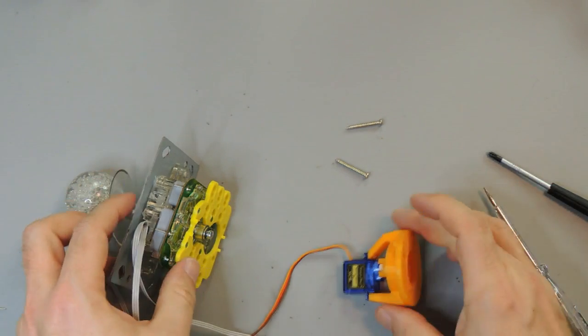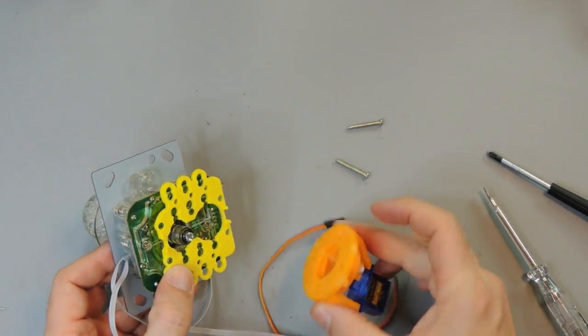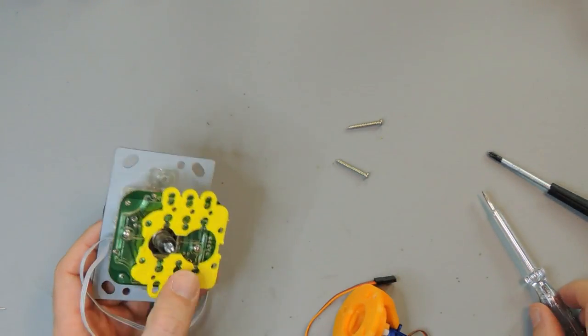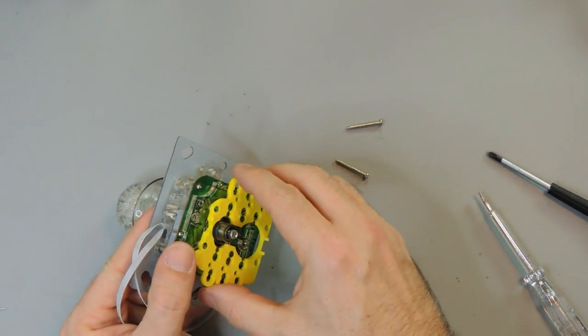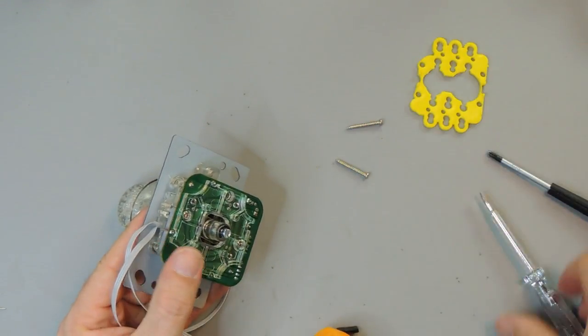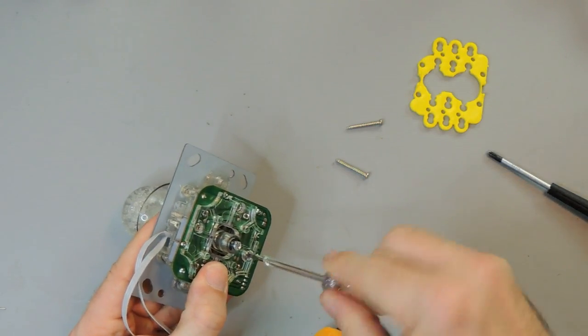So last step is just to put that assembly on the bottom of the joystick. Therefore we need to de-install the restrictor plates that come with the joystick first. There's a second plate.